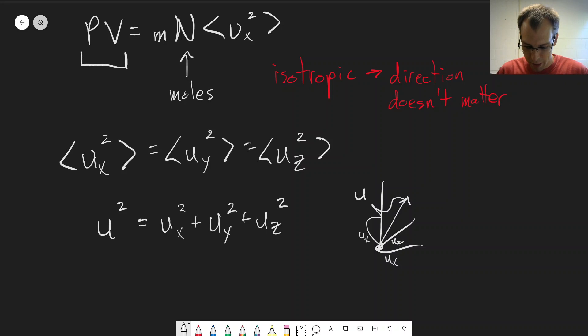And that same formula, if we just take the average of everything, we'll have the same formula. So the average of the square of the velocity is going to be equal to the sum of the averages of the squares of the individual components.